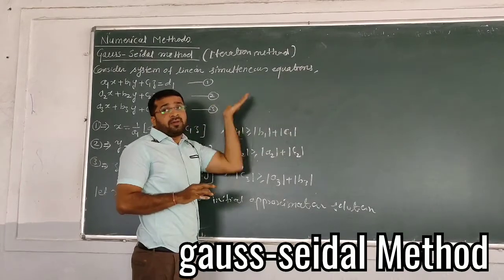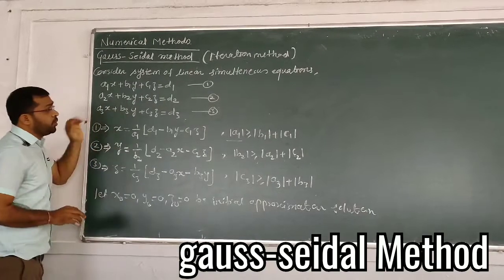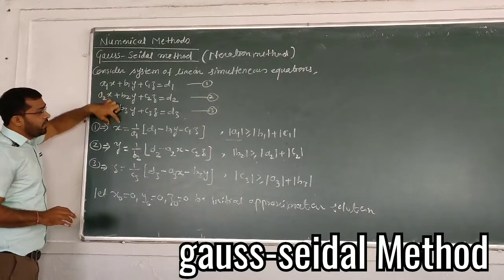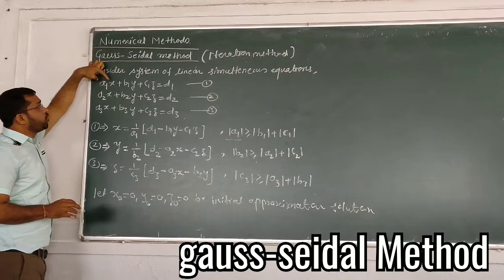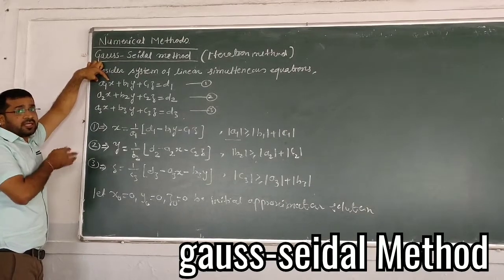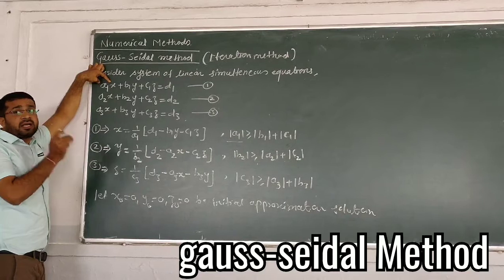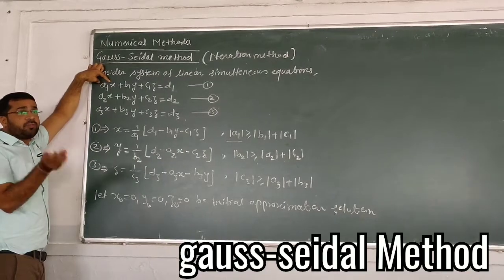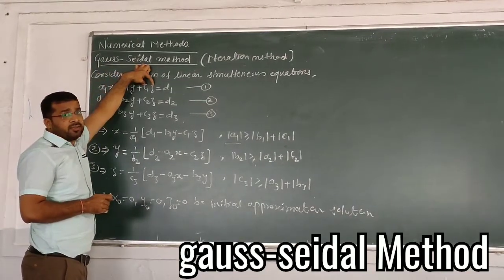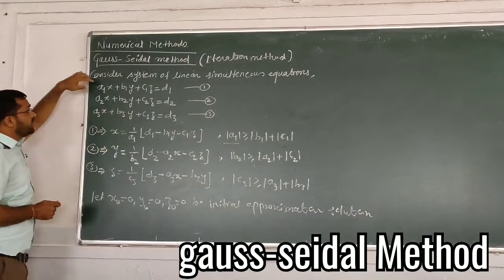If this condition is not satisfied, the iteration will not converge. So the modulus of the coefficient of x must be greater than or equal to the modulus of the sum of the coefficients of y and z. This is an important requirement.